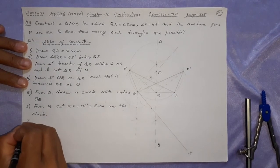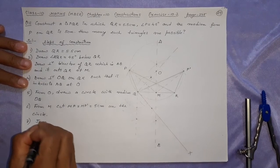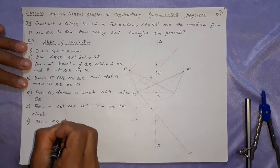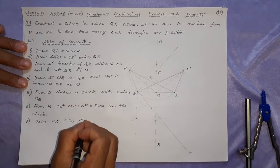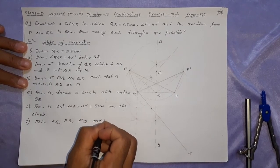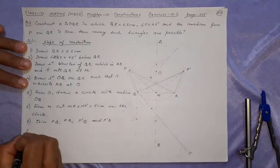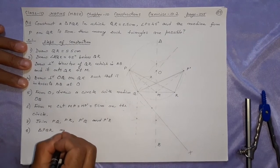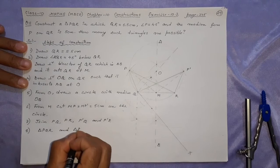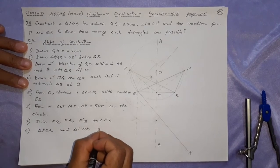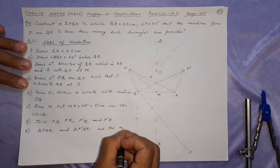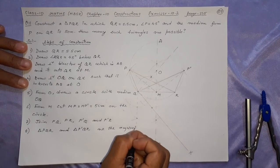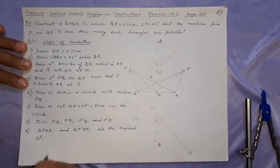Number seven: join PQ, PR, P dash Q, and P dash R. Next step: triangle PQR and triangle P dash QR are the required triangles. Thank you.